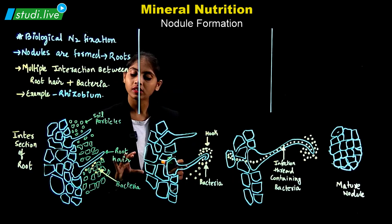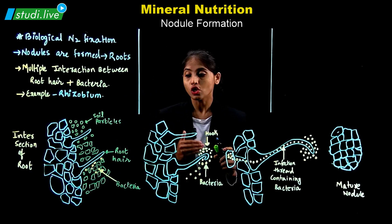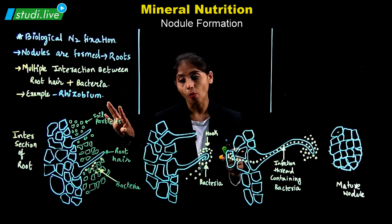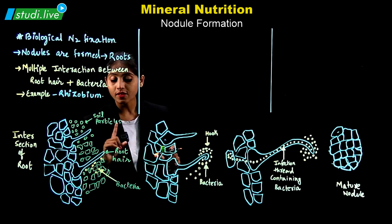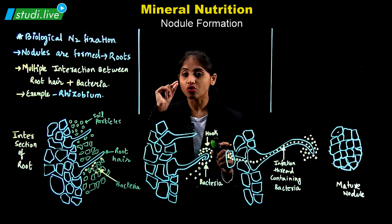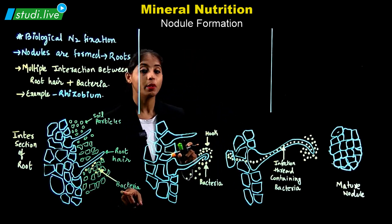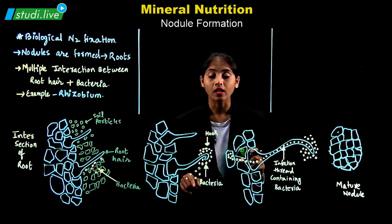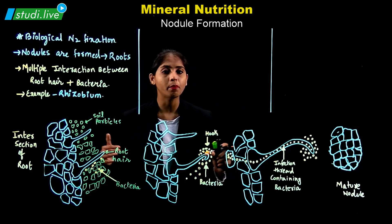Since this root is present inside the soil, there will be soil particles present around the root. We have soil particles, we have root hair, and we also have one more constituent highlighted with orange spots — that is nothing but the bacteria. These bacteria come in contact with the plant through the soil, since they are already present in the soil through organic decomposition.